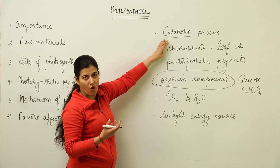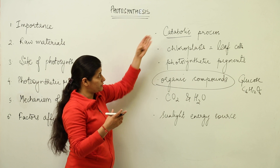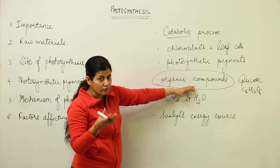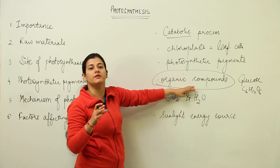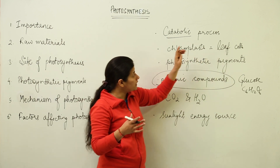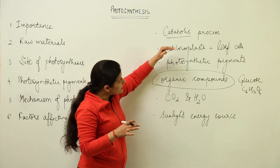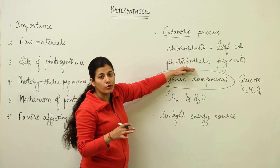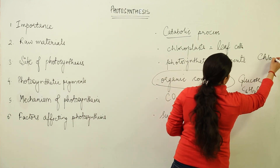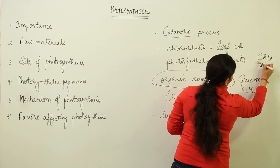To think about photosynthesis clearly: first, something is formed — remember the term catabolic process. What is formed? Organic compounds. Where are they formed? Inside the leaves, in the leaf cells which contain chloroplasts. Chloroplast is an organelle inside the cell. Inside the chloroplasts, there are photosynthetic pigments. You know about the terms chlorophyll and xanthophyll — chlorophyll A, B, C — such are the pigments. We are going to talk about these.